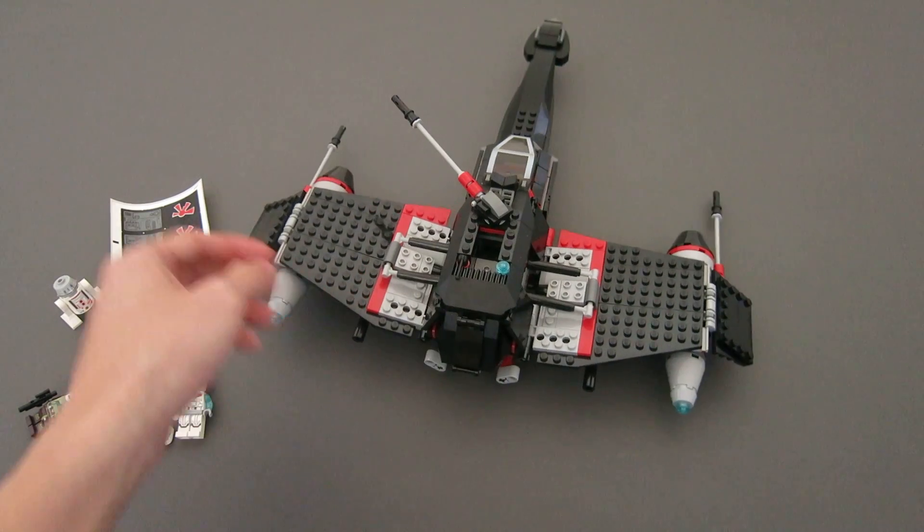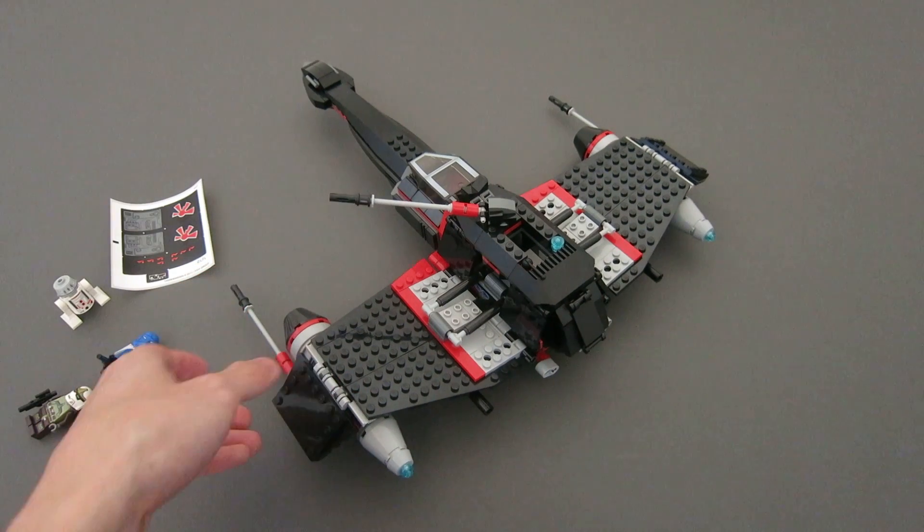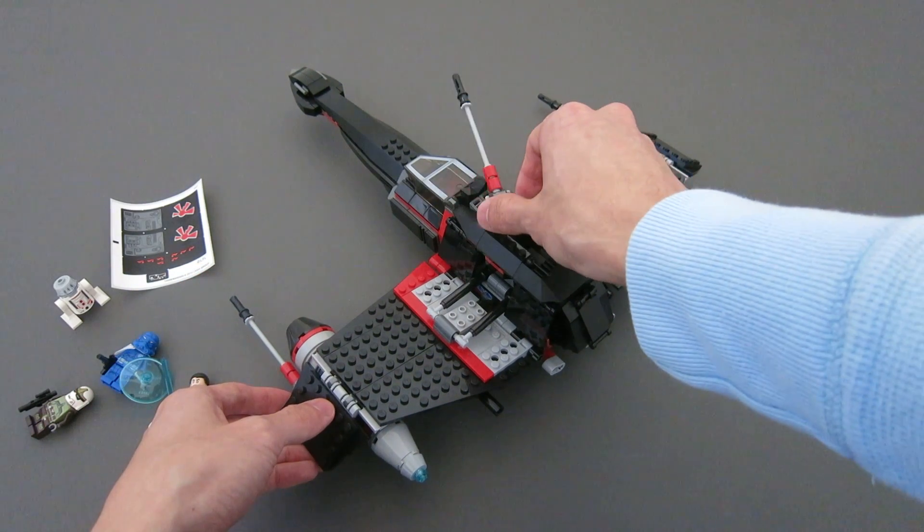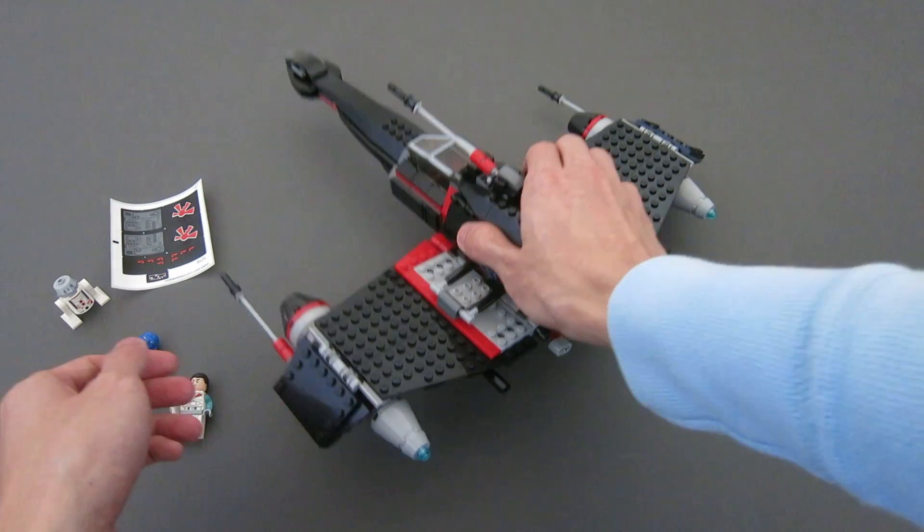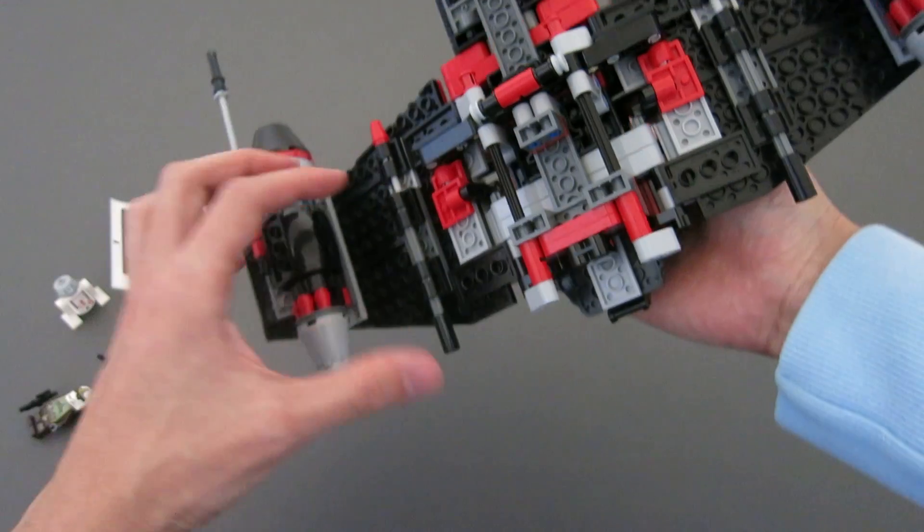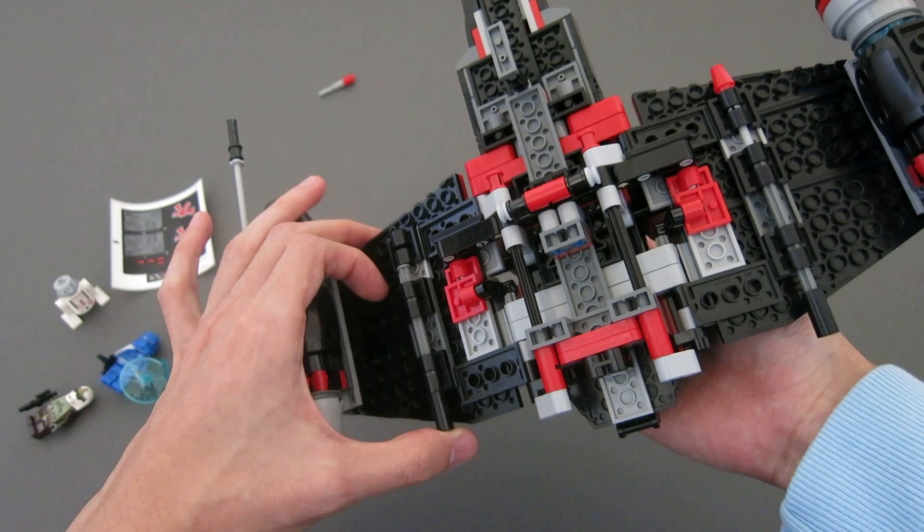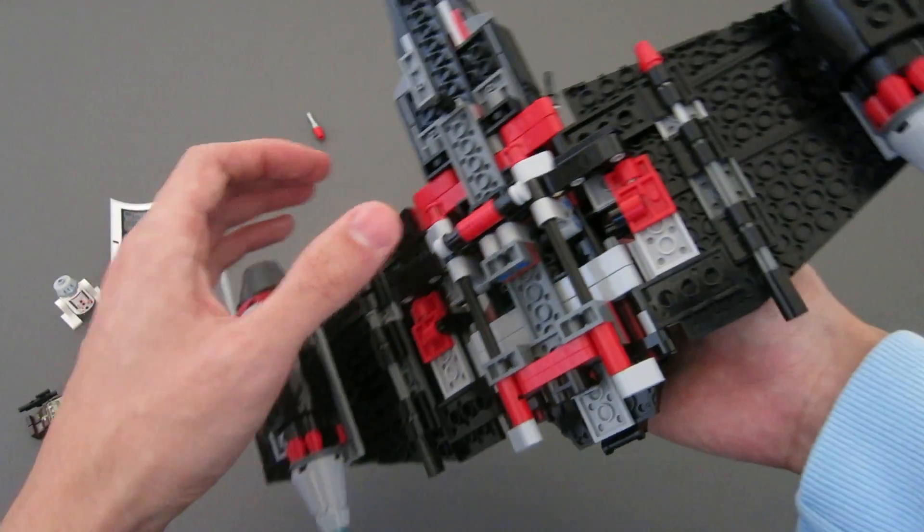No idea. Someone knowledgeable of Star Wars, please educate me on that. This is a rotating cannon, goes 360, and then underneath you have flick fire missiles. They obviously don't shoot very far.